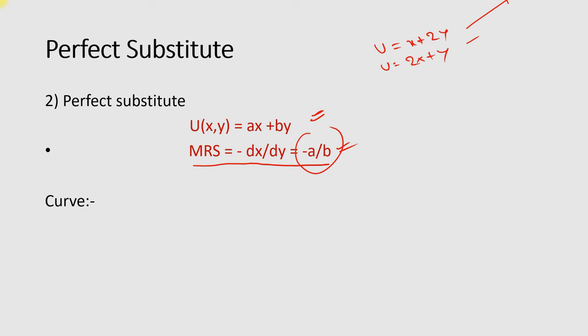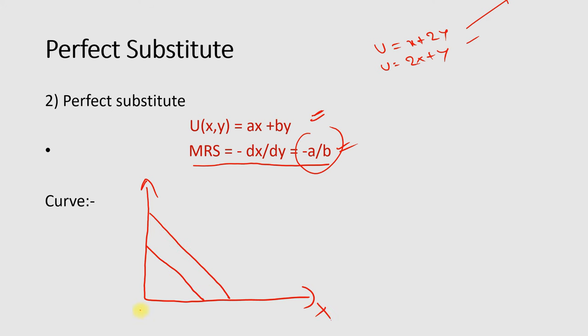If you plot a perfect substitute utility function graph, it will look like this — a perfectly sloped downward line from left to right.